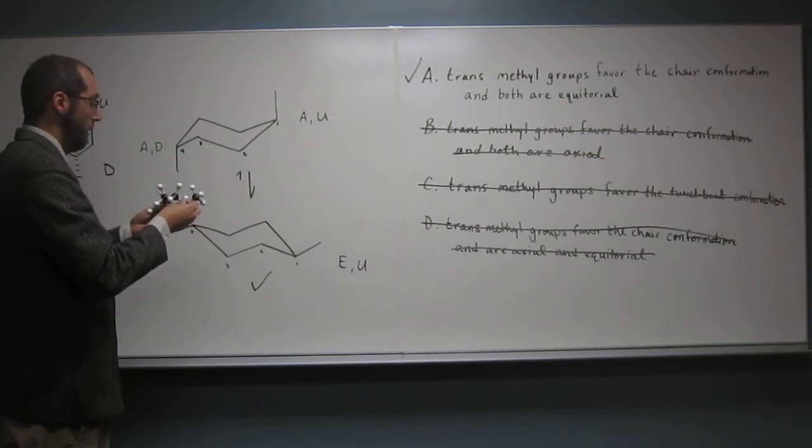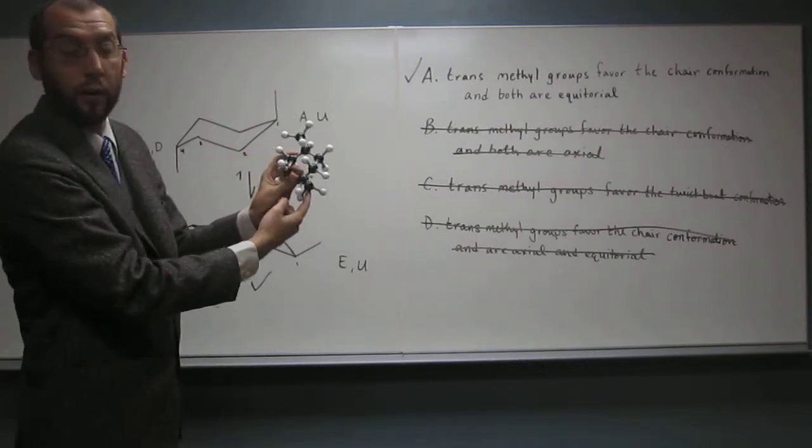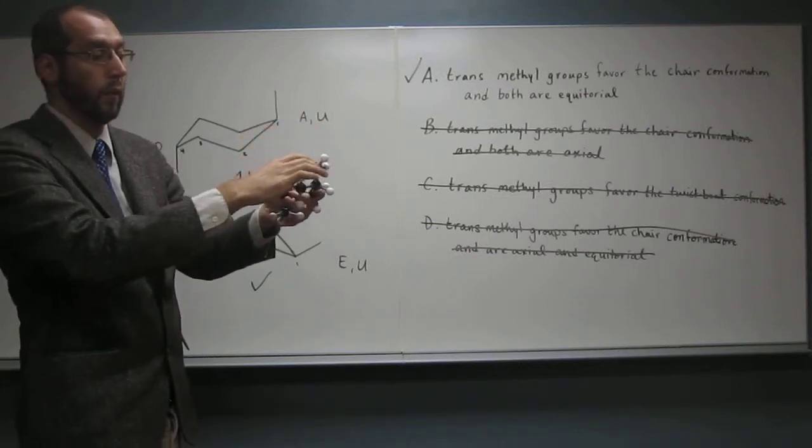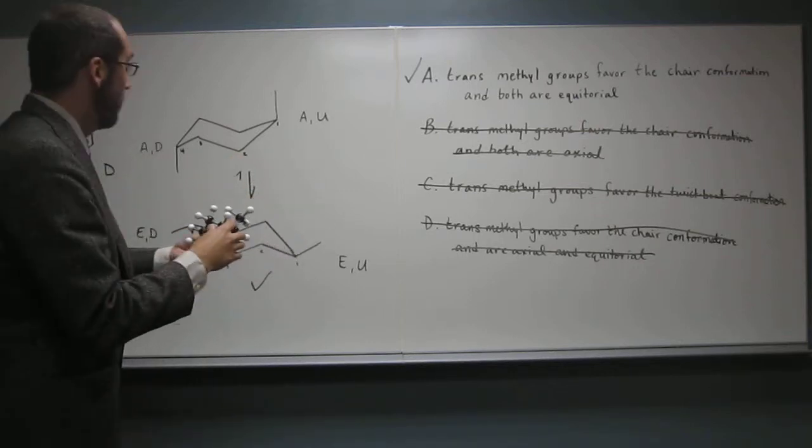So if we look here, we've got this molecule, 1,4-trans, right. The two methyl groups are on opposite sides of the ring, 1,4-trans-dimethylcyclohexane.